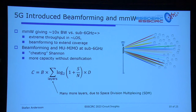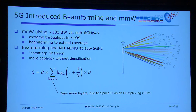Why haven't we always done beamforming? It is more energy efficient, but it's also a bit problematic because you have to track users as well. Beamforming is also a way to cheat the channel a little bit: you can use the same frequency and the same bandwidth for different users — one beam here, one there — using exactly the same frequency again. In that way it's also a way to have more capacity without densifying the networks.